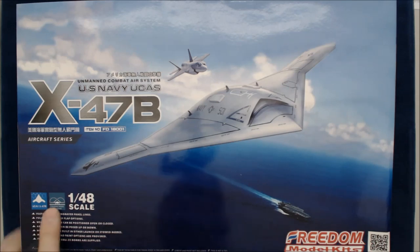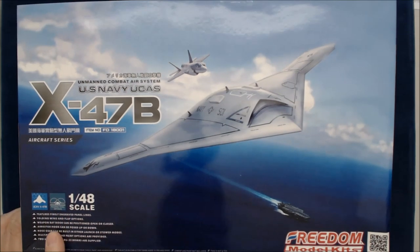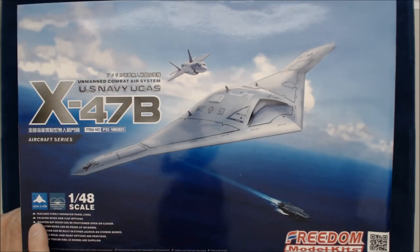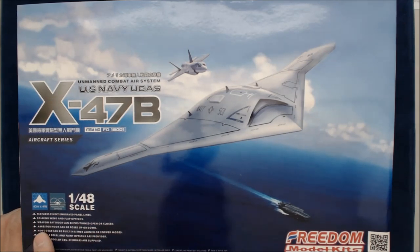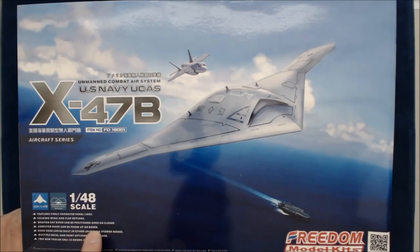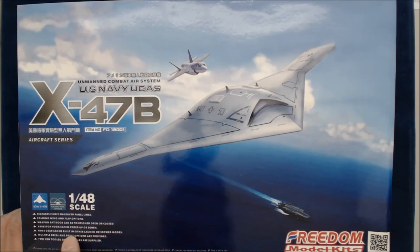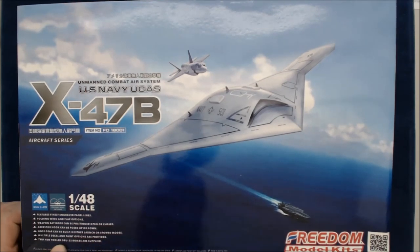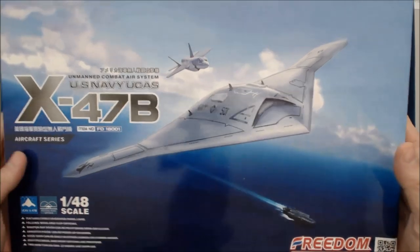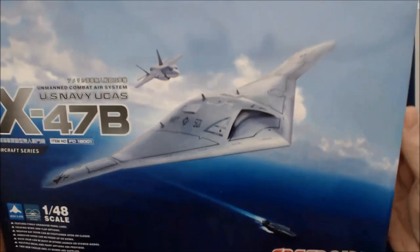It has folding wing options according to the box. Features finely engraved panel lines, folding wings and flap options. Weapons bay door can be positioned open or closed. A ruster hook can be posed up or down. Nose gear can be built in either launch or stowed modes. Multiple decal and paint options are provided. Two-step tooled GBU-32 bombs are supplied.